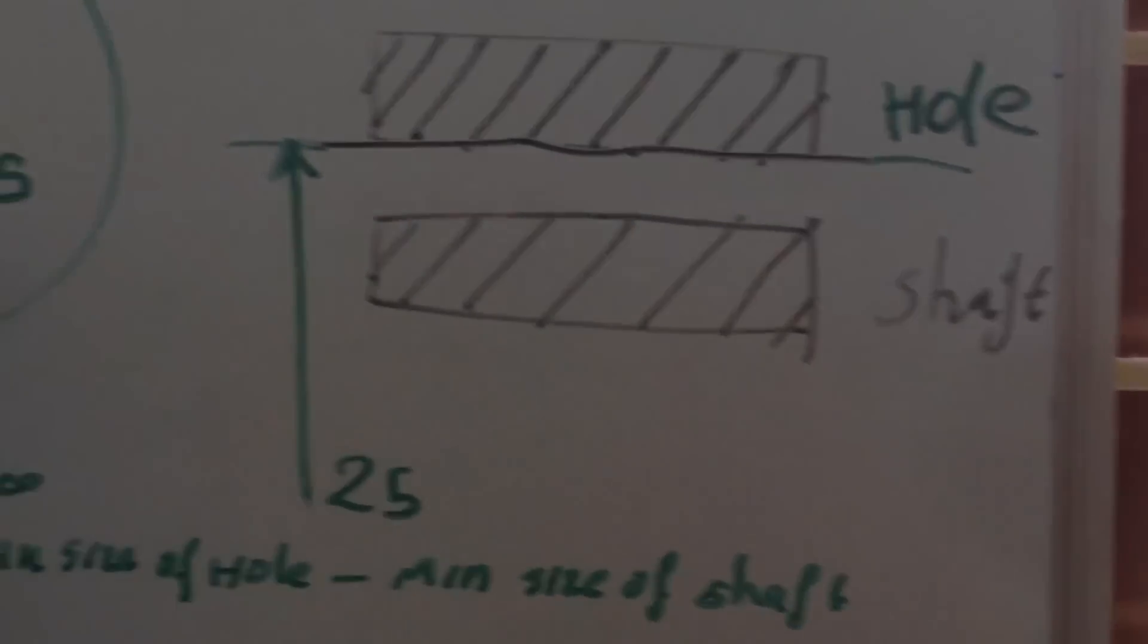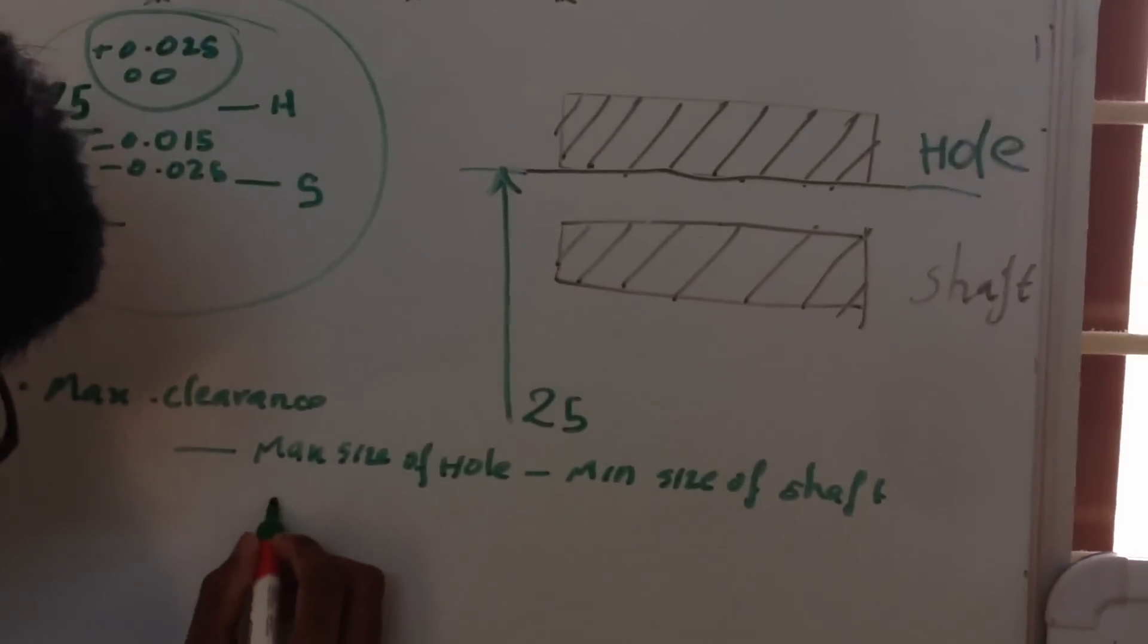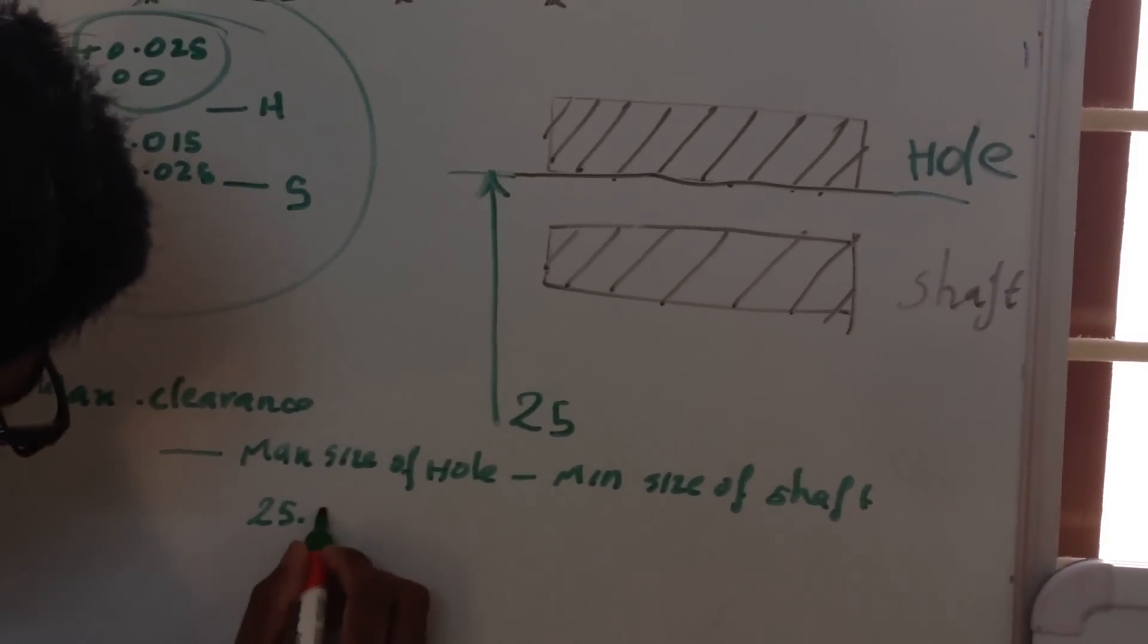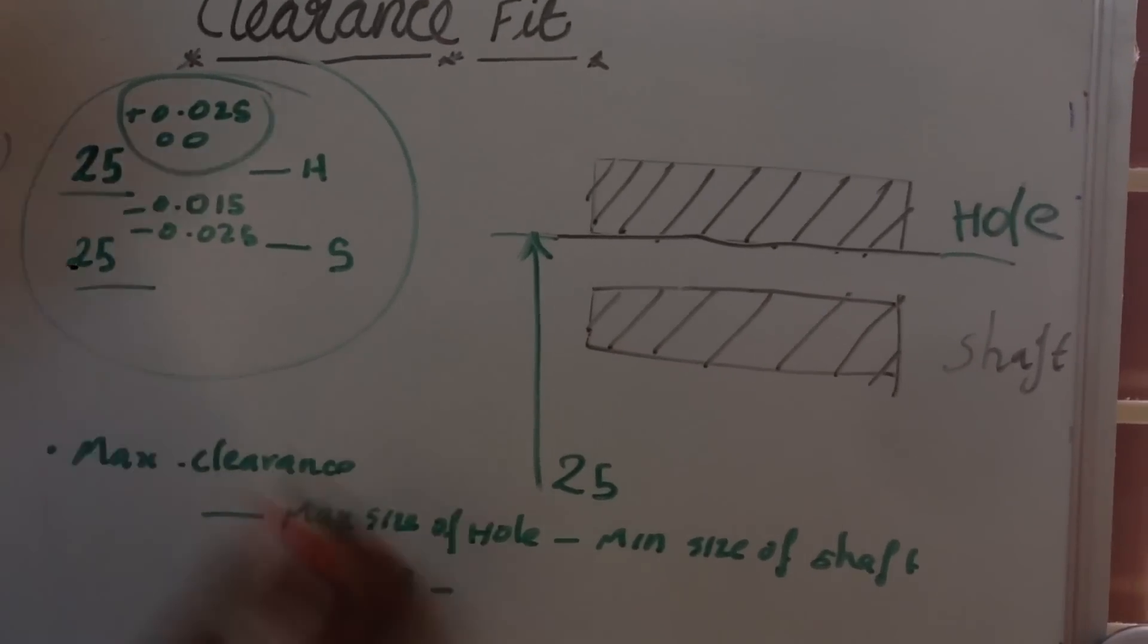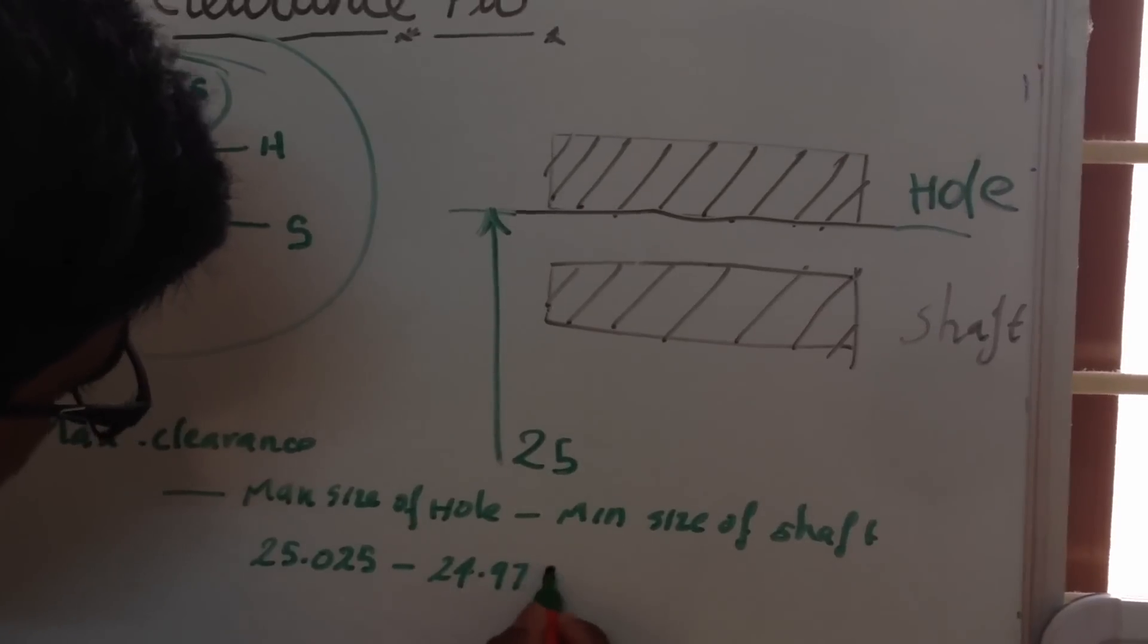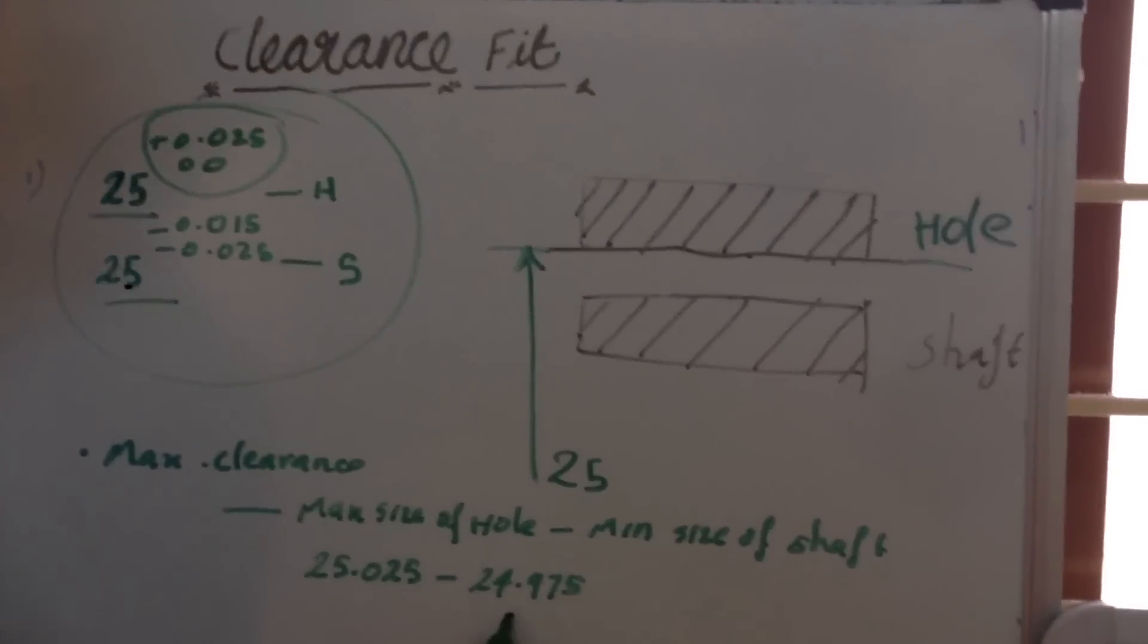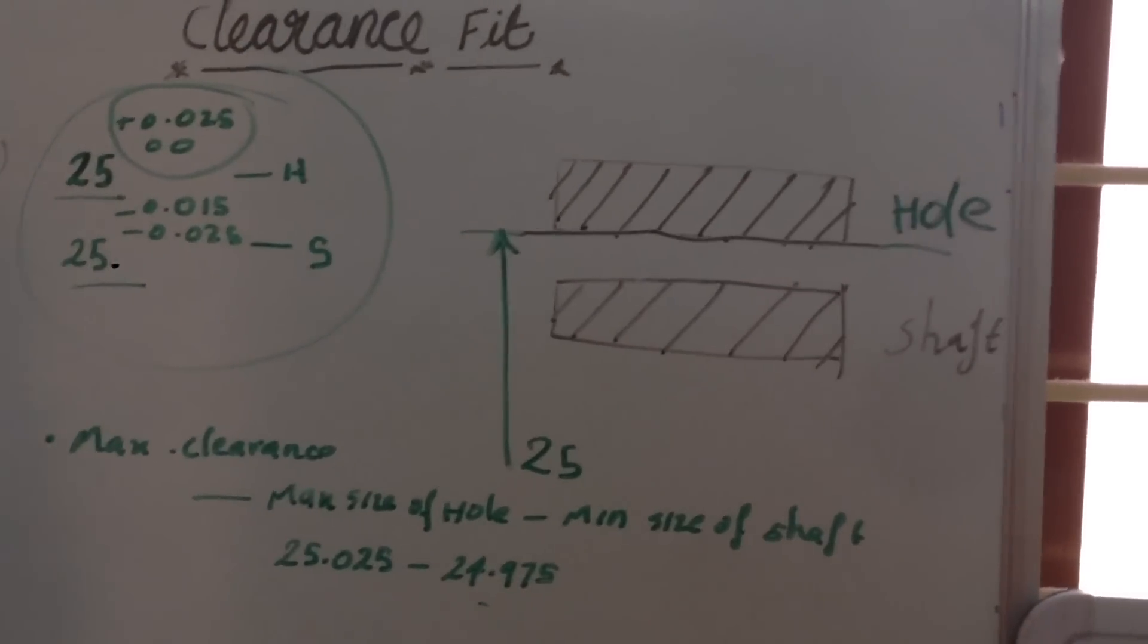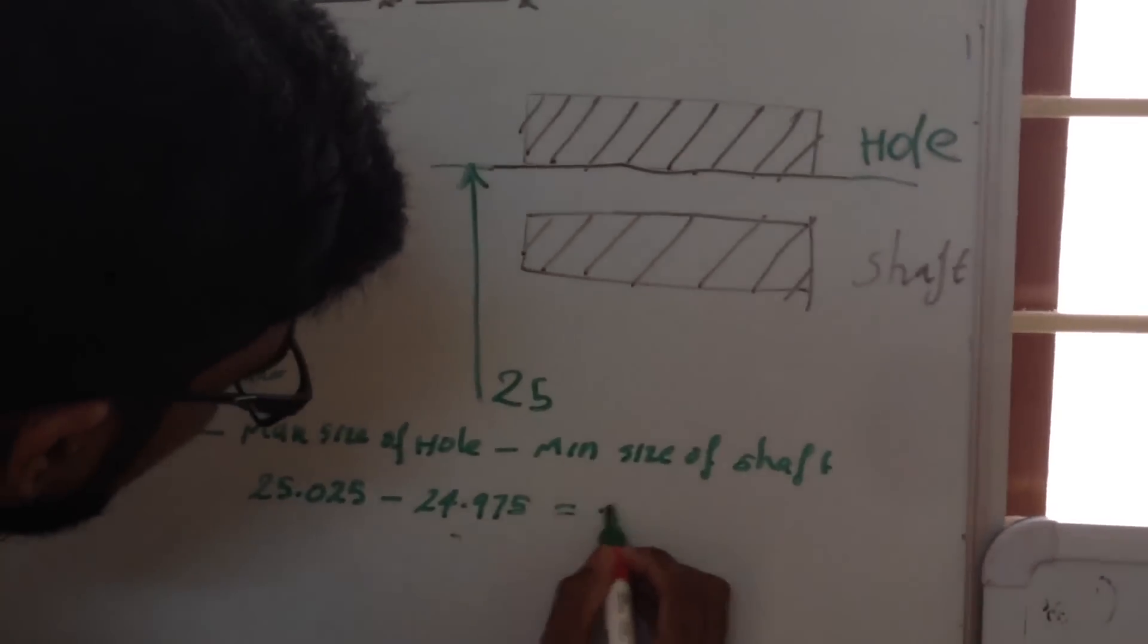Here it is 25.025 minus 24.975. That is 25.025 minus 24.975. So the answer will become 0.05.